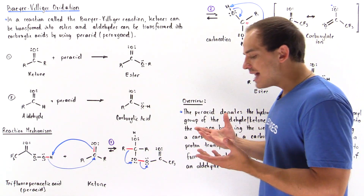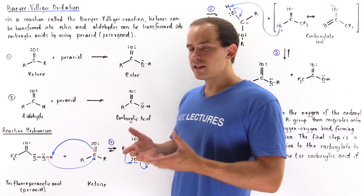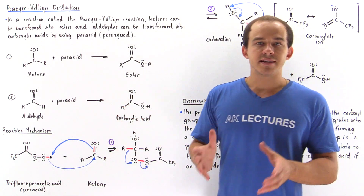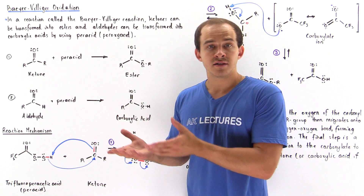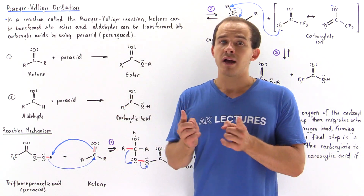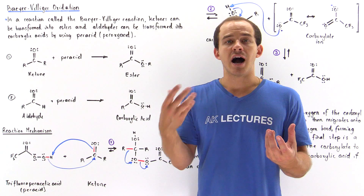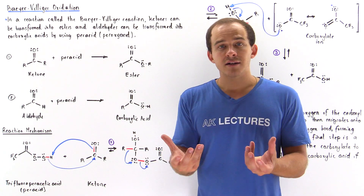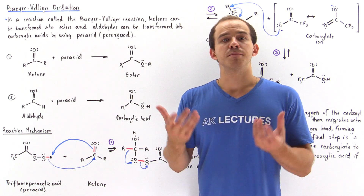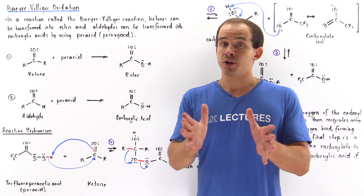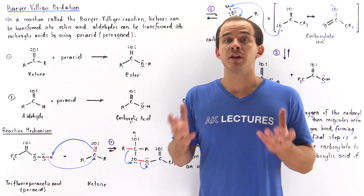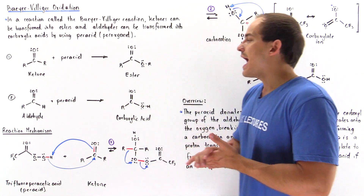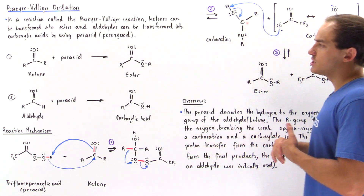A peroxyacid is basically a molecule that contains a hydroxy group as well as an oxygen-oxygen bond. This oxygen-oxygen bond is pretty weak and it plays an important role in the reaction mechanism, as we'll see in just a moment.